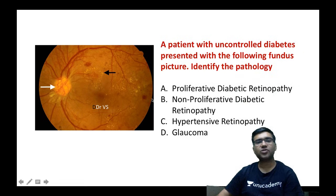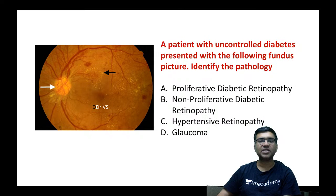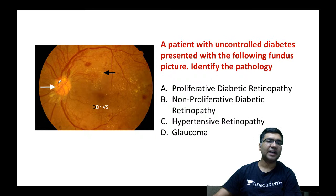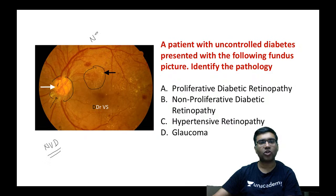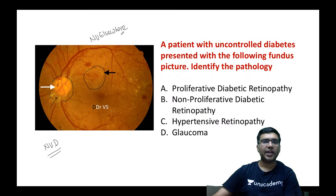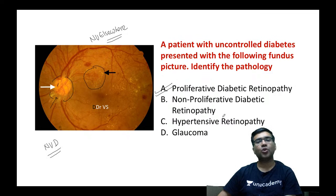A patient with uncontrolled diabetes presents with the following fundus picture. You can see many new vessels at the level of the optic nerve head — neovascularization of the disc — and elsewhere in the retina — neovascularization elsewhere. Whenever we get neovascularization, this patient is suffering from proliferative diabetic retinopathy.